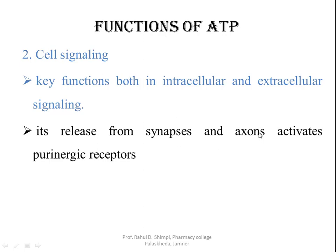Intracellular and extracellular signaling can be carried out by the release of ATP from the axon terminals. Along with the neurotransmitter, ATPs are also released. These ATPs then act on their own receptor, known as the purinergic receptor. Due to the activation of this purinergic receptor, ATP modulates the release of calcium inside the cells, and thereby gives the appropriate response.